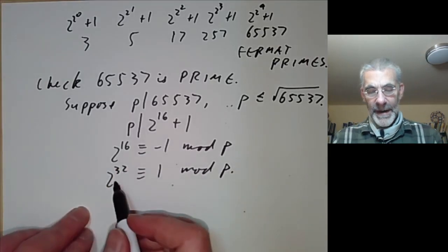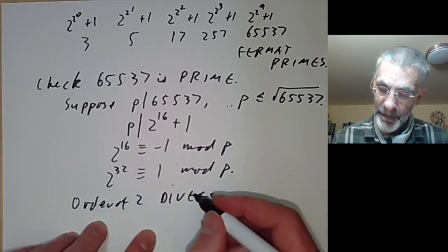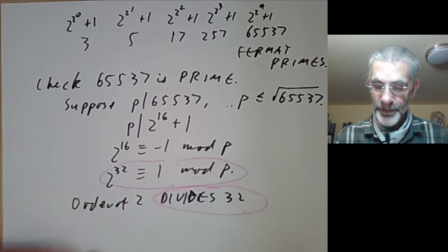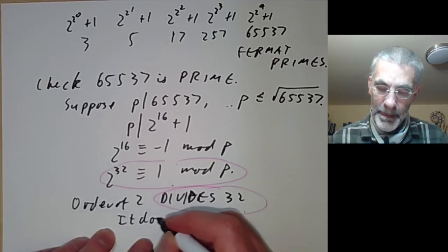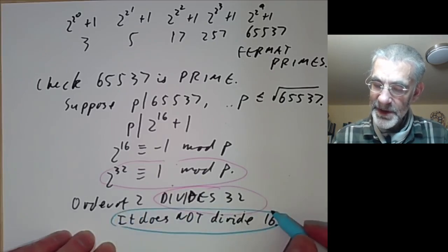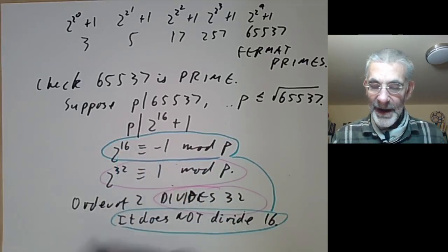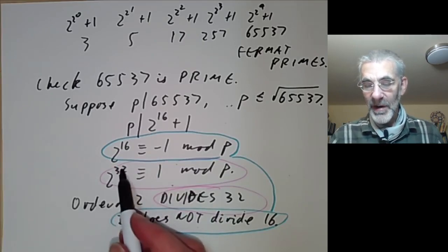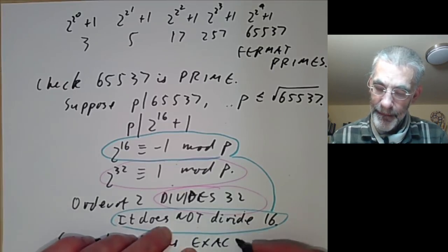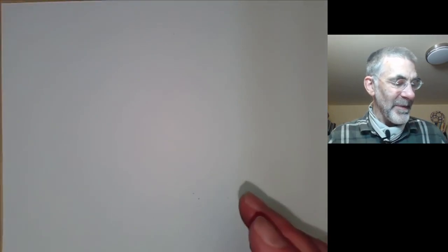Now we look at the order of 2. It divides 32 (from the condition 2^32 ≡ 1), but it does not divide 16, because 2 to the 16 is -1, so no power of 2 dividing 16 can be 1. Since the only factors of 32 are those that divide 16 or equal 32, the order of 2 is exactly 32.